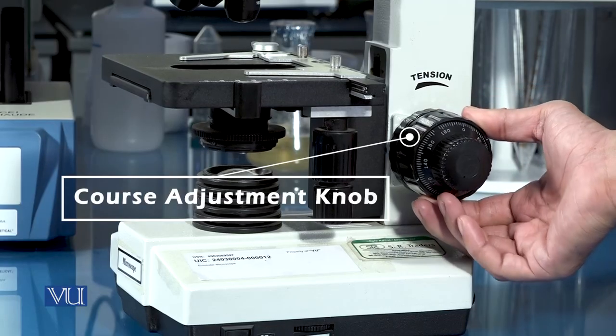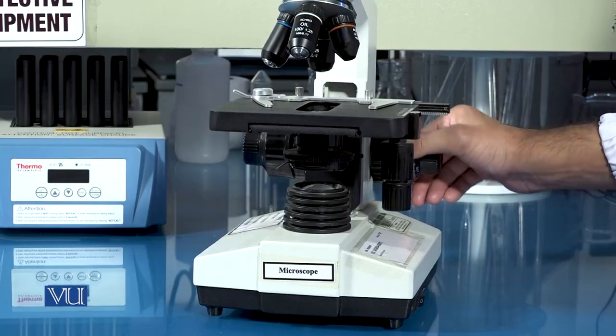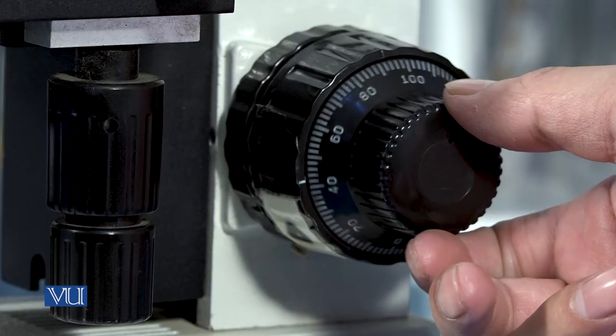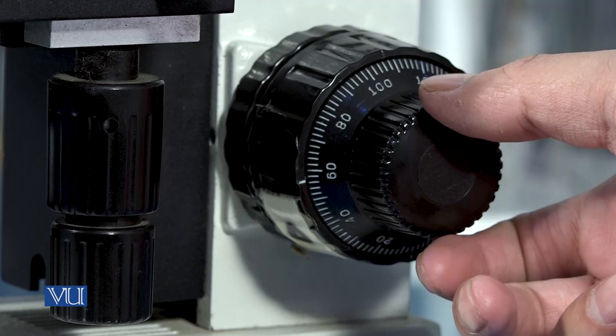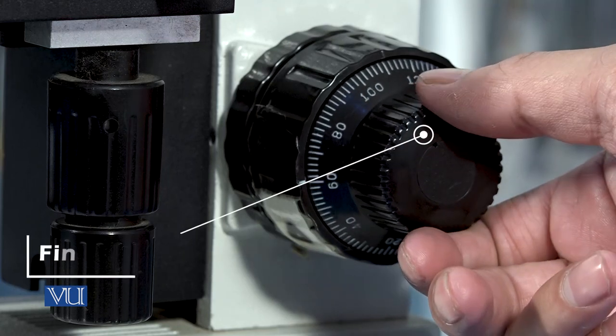The microscope stage can be moved up and down using the coarse adjustment. Once the slide is focused using coarse adjustment, fine focus is used to further improve the resolution of the specimen.